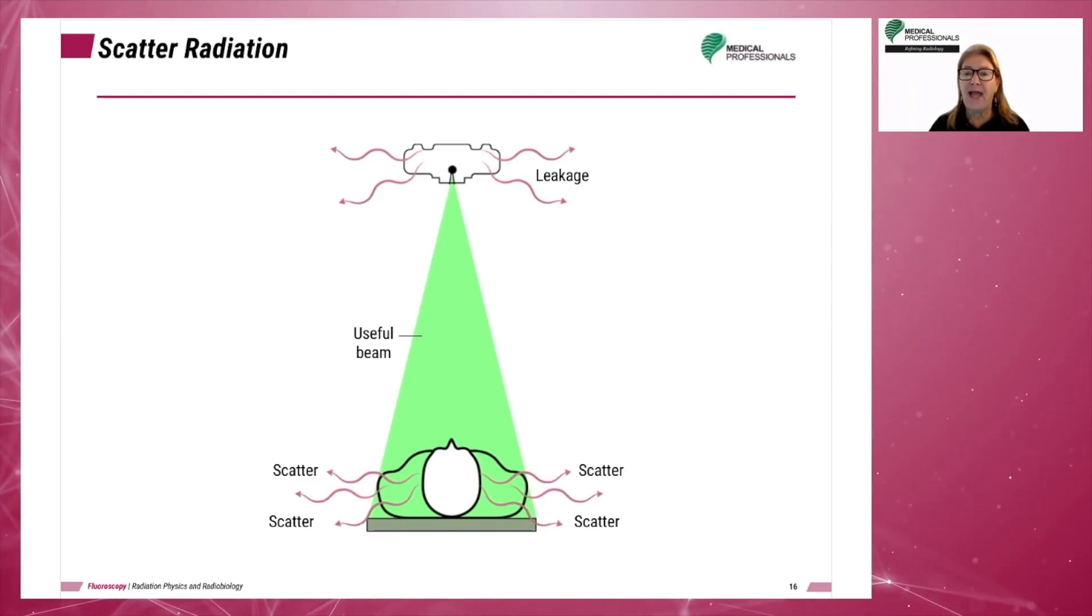Coherent scatter is the product of an interaction of an x-ray photon with an outer shell electron. The interaction does not result in an ejected electron. It more or less just bounces off of the electron. The scattered x-ray photon retains its energy level.